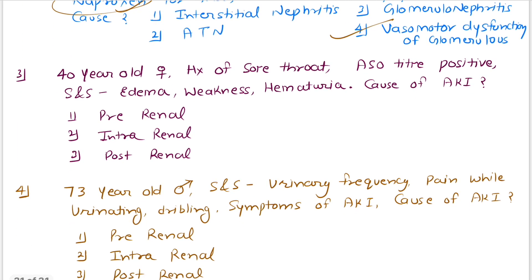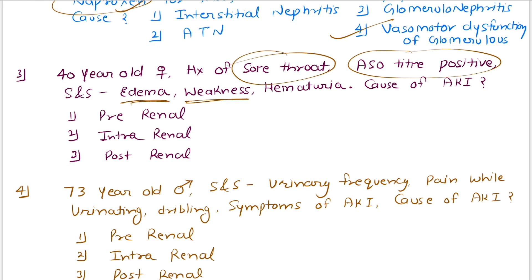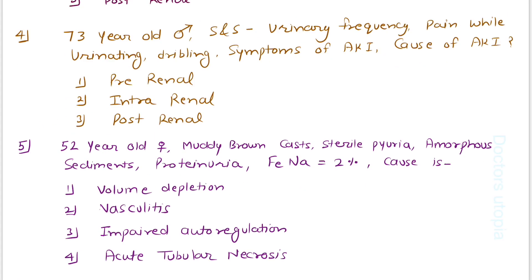Third question: a 40-year-old female with a history of sore throat has a positive ASO titer — anti-streptolysin O — along with edema, weakness, and hematuria. What is the cause of AKI? A positive ASO titer following sore throat points to post-streptococcal glomerulonephritis, which falls under intrinsic renal cause.